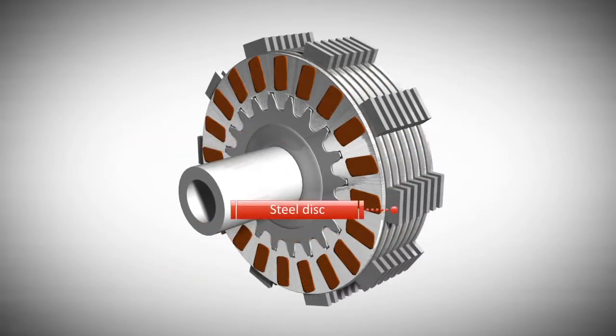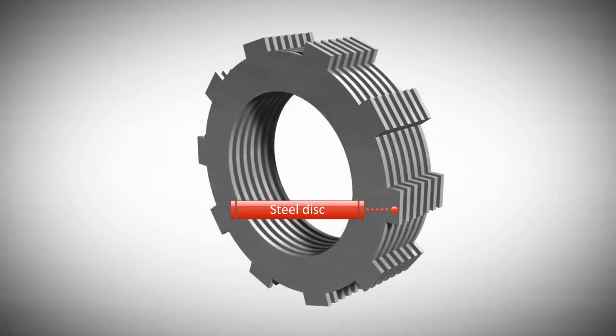Steel disks can be found between the friction disks. These steel disks sit interlocked within the basket.